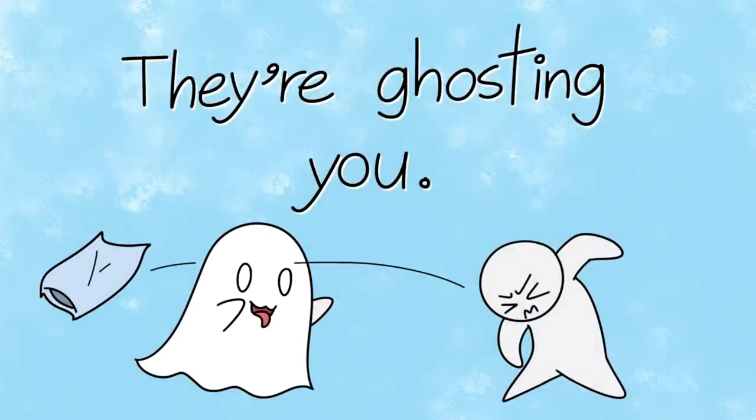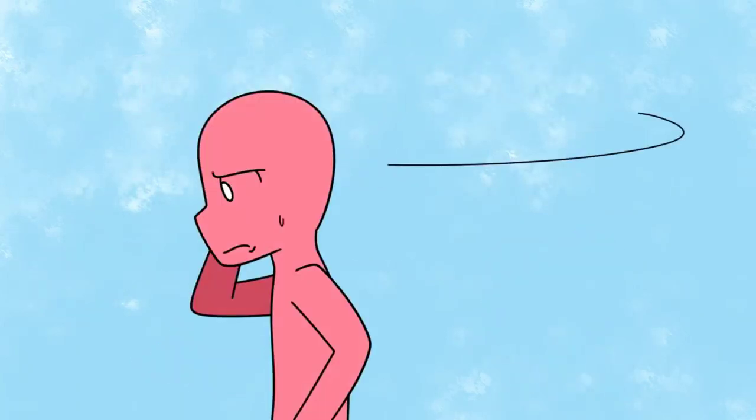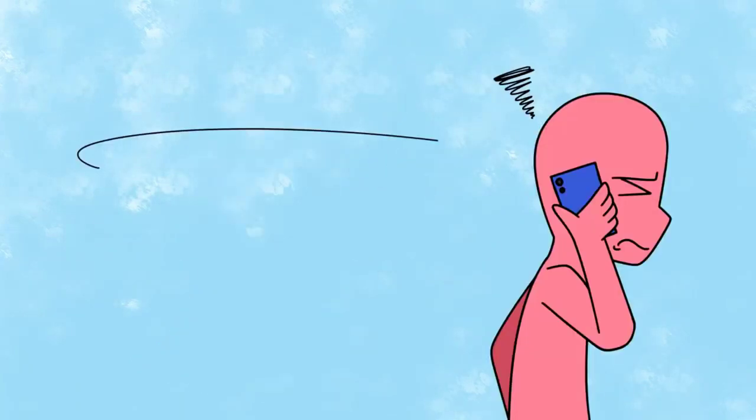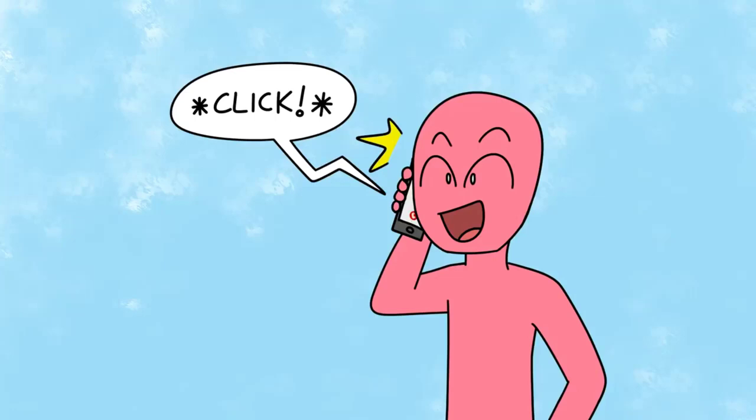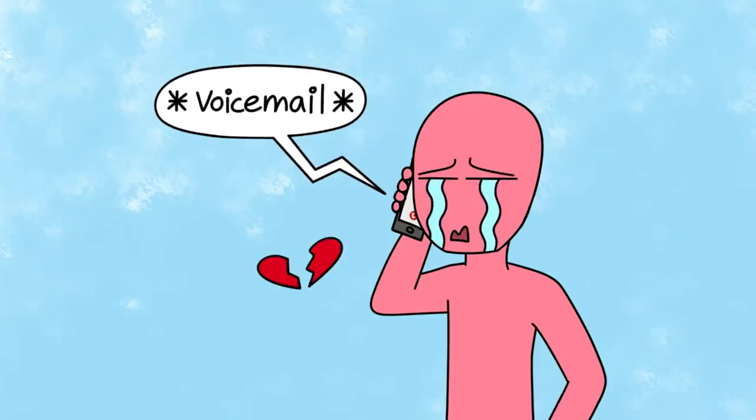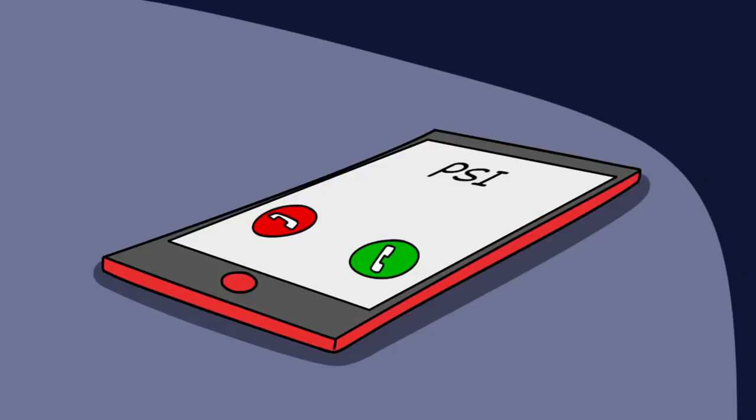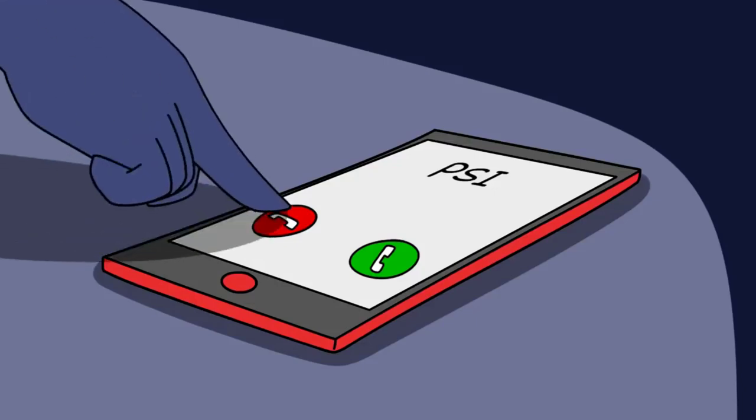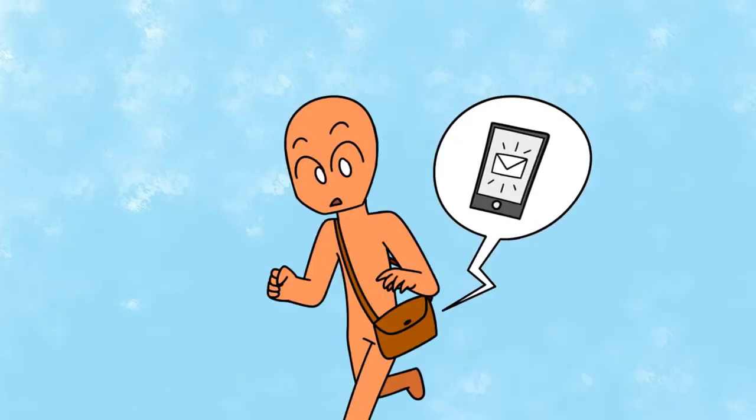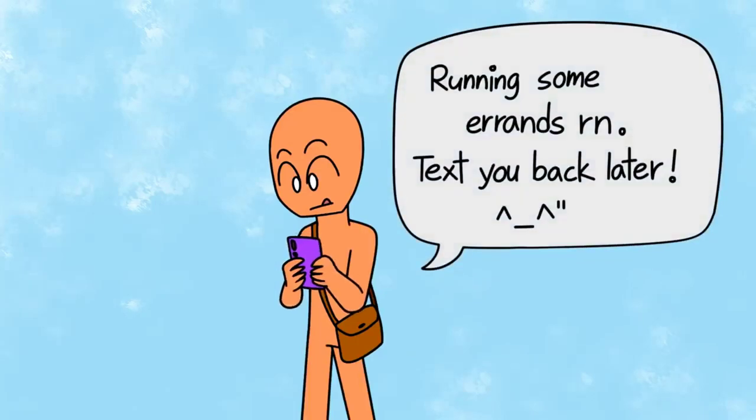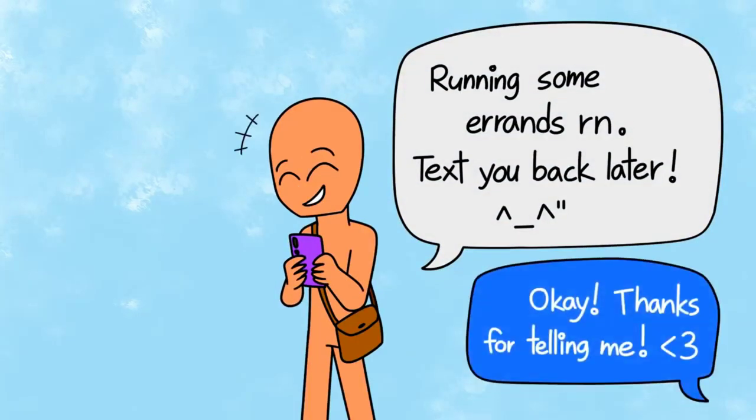Number five: They're ghosting you. Ghosting is when people refuse to answer your texts or return your calls. Ghosting can be very confusing, especially in a relationship. This is a pretty big sign that someone is leading you on. Even if they're busy, if someone really cares about you, they'll take a few seconds and reply to your texts to let you know that they are.